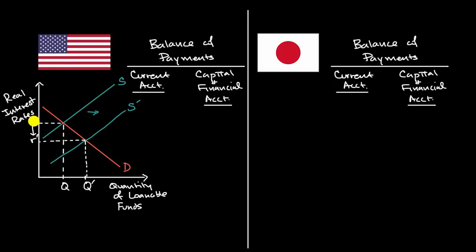Well, if the real interest rates go down in the United States, and we're assuming that all else equal in every other country, well, then you have a situation where in Japan, the relative real interest rates are now higher. So relative real interest rates are higher.